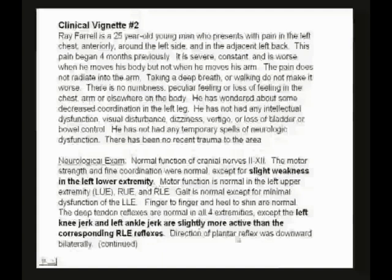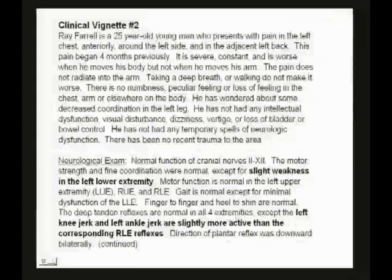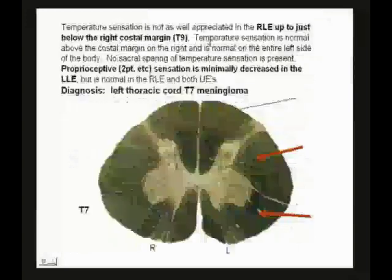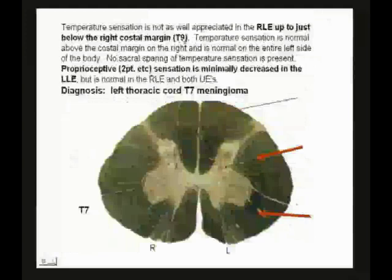The plantar reflex was downward — that's normal, but you don't always get a Babinski. There is some increased pressure on an upper motor neuron pathway. There are also problems with temperature sensation on the right lower extremity up to the right costal margin, around dermatome T9. So pain and temperature problems on the right, weakness on the left, and some decreased proprioception on the left. The diagnosis: a left thoracic cord T7 meningioma.